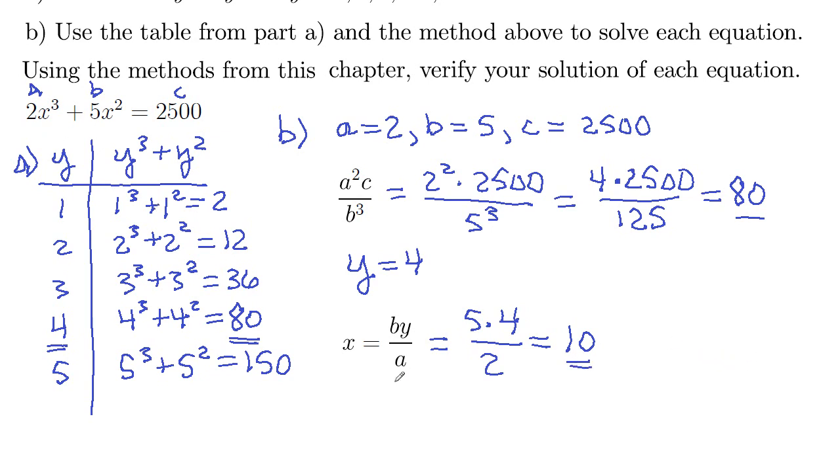And then you can double check that here. So two x cubed, so two times ten cubed, plus five times x squared, so five times ten squared. And then what does that equal? Well, ten cubed is a thousand, so two times a thousand, two thousand. Ten squared is a hundred. Five times a hundred, five hundred. So two thousand plus five hundred. Sure enough, twenty-five hundred. So ten is the solution to that equation from this Babylonian method.